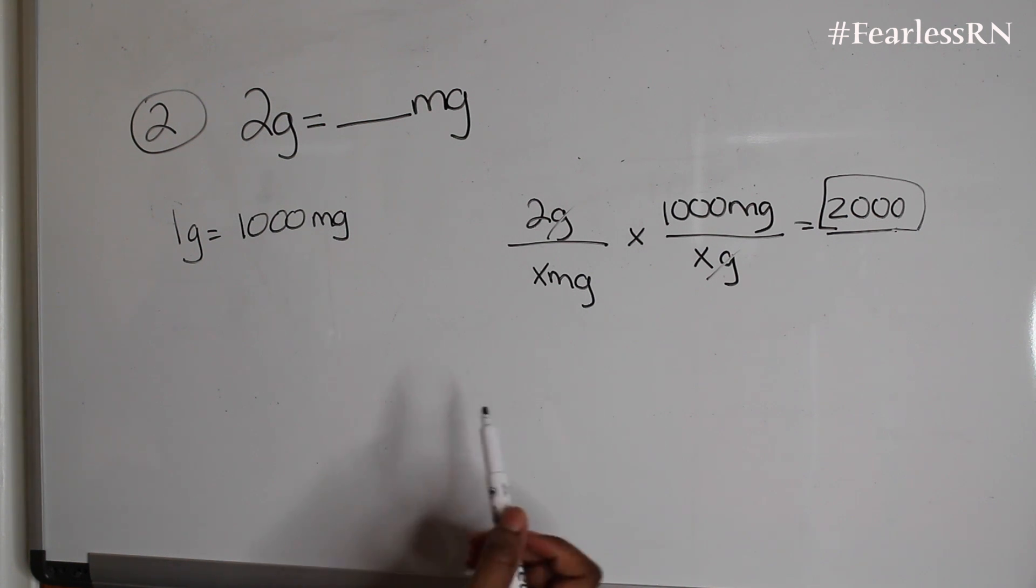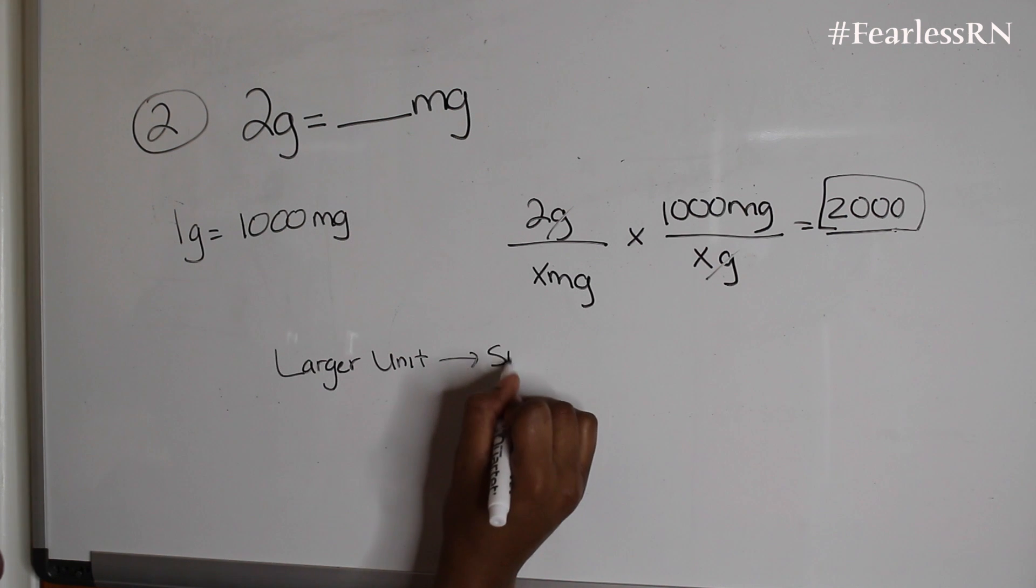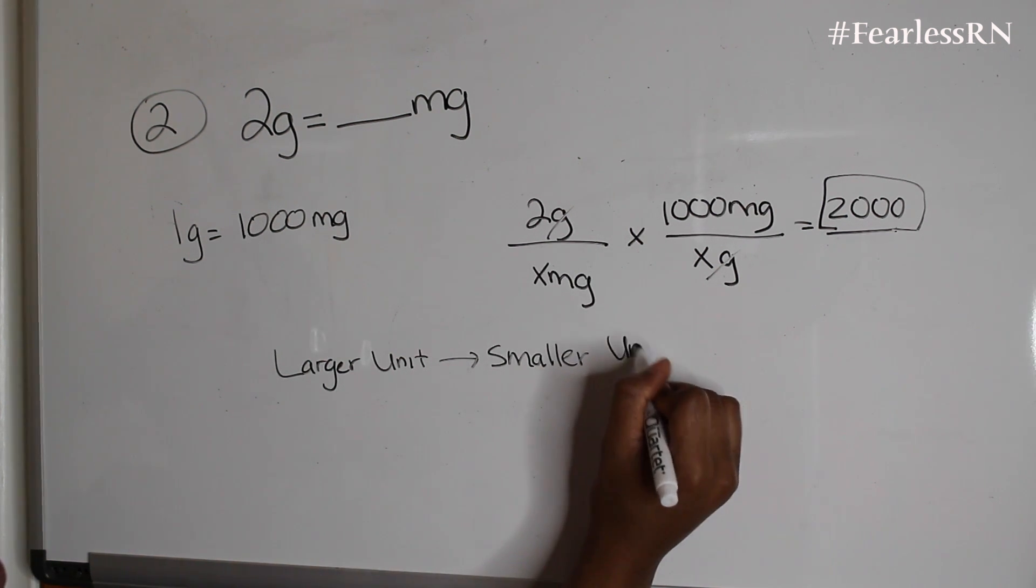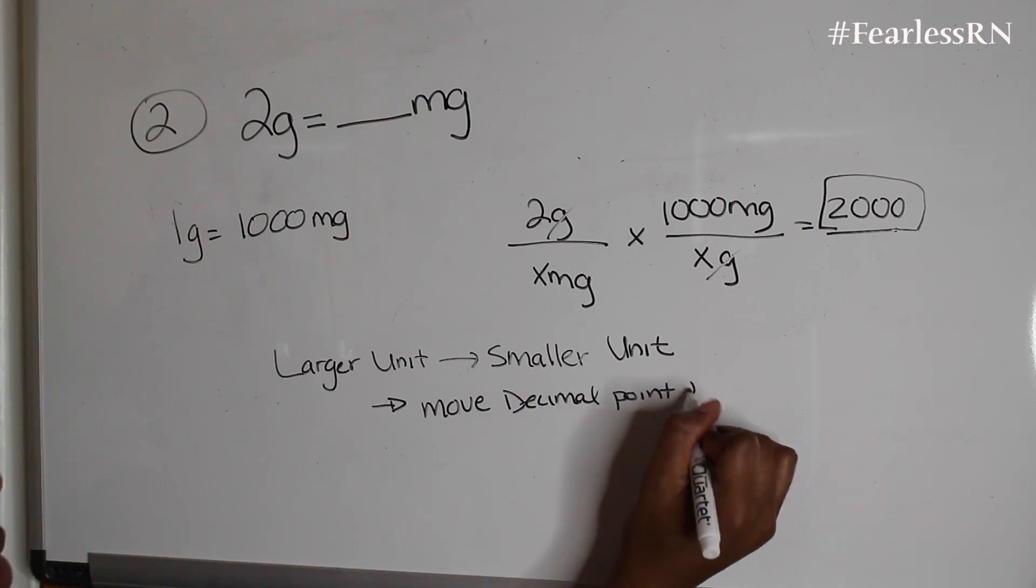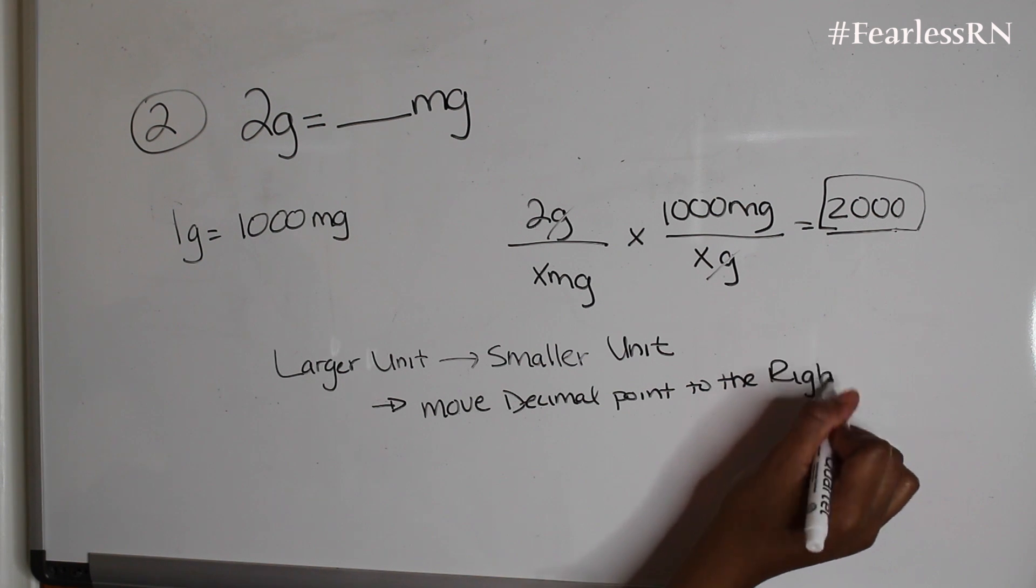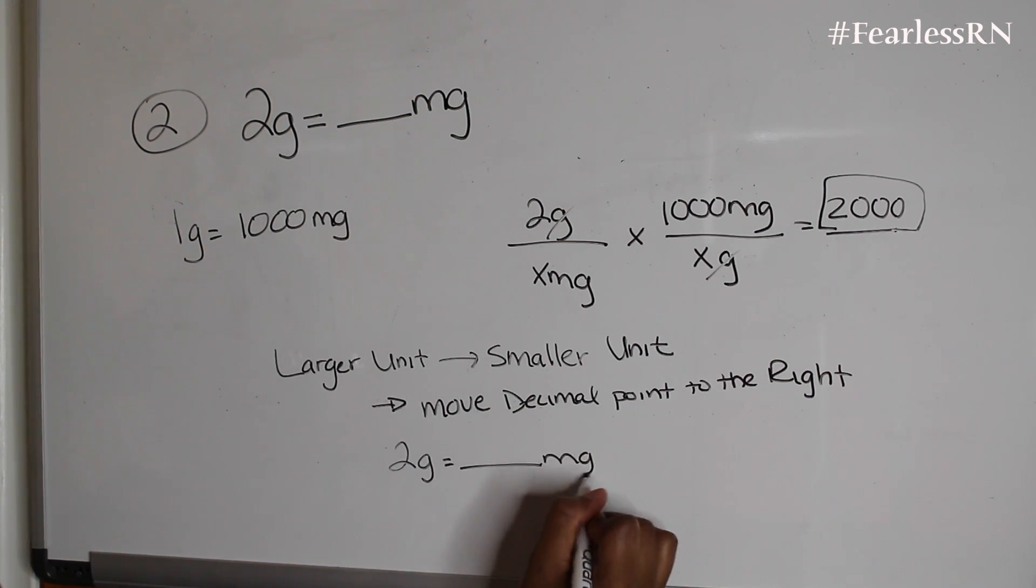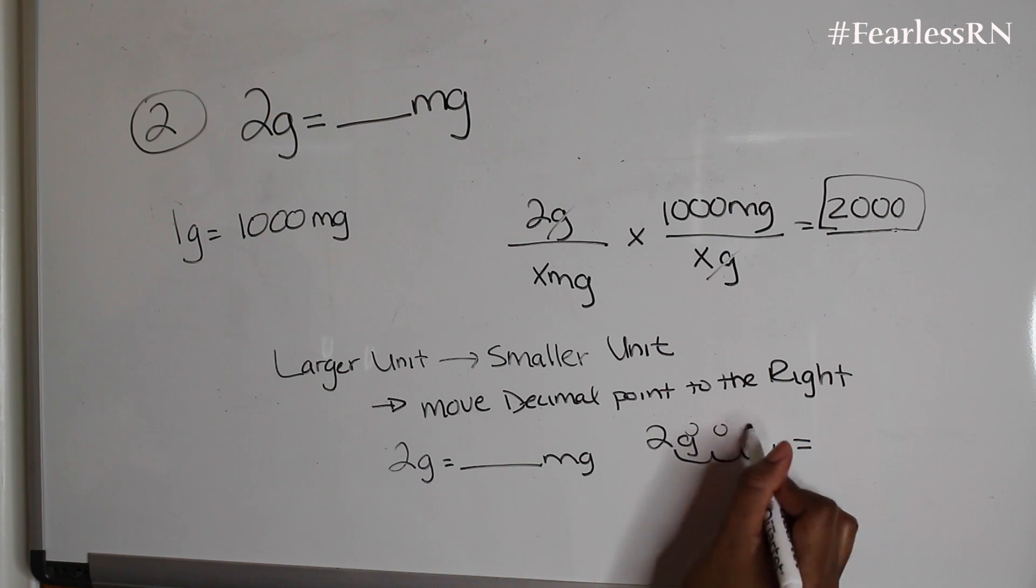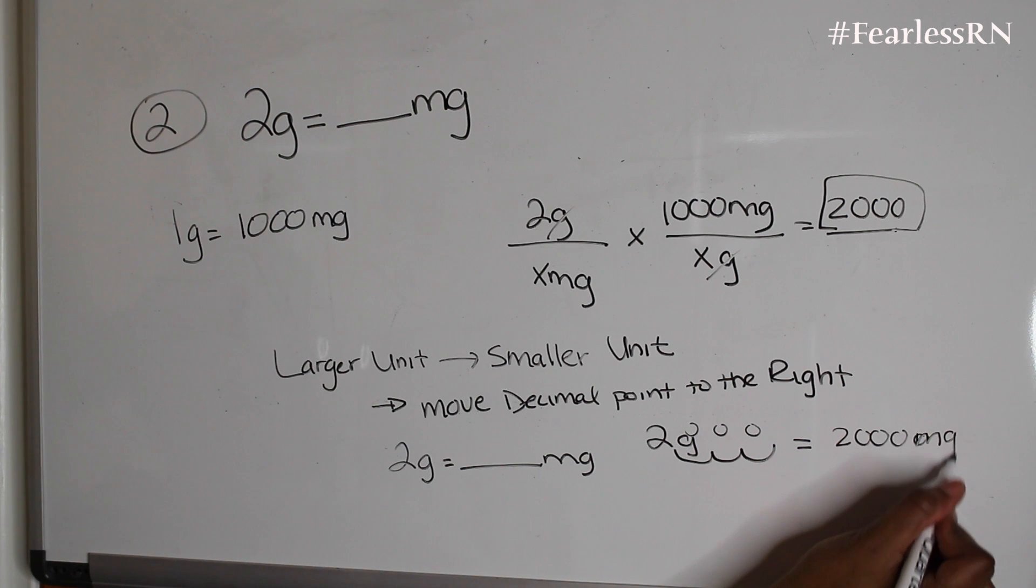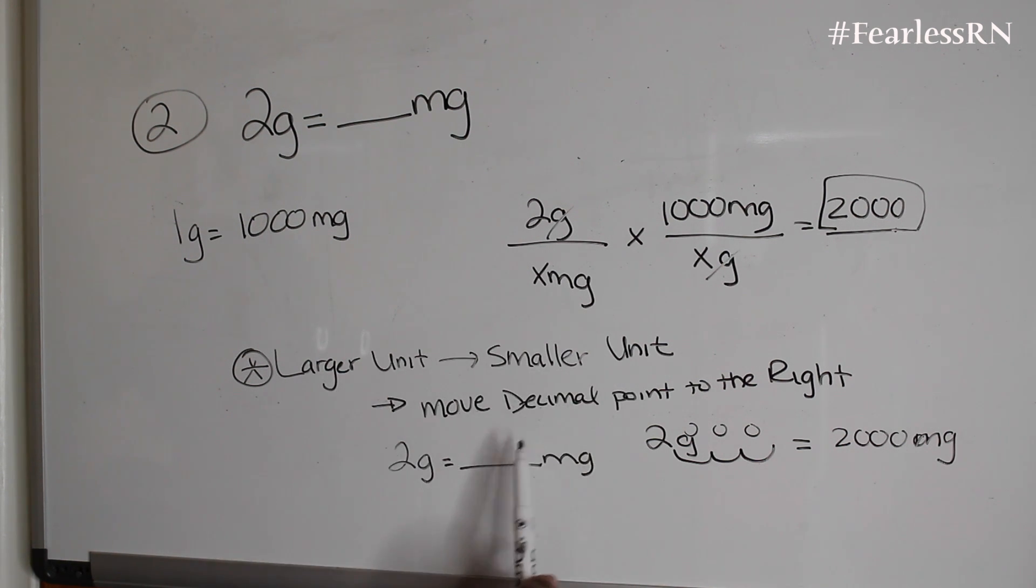A trick to do this problem is to know that when you're going from a larger unit to a smaller unit, move the decimal point to the right. So let's see. So if you have 2 grams, so we'll be here: 1, 2, 3 equals 1, 2, 3, 2,000 milligrams. That is a trick. We're going from a larger unit to a smaller unit. Move the decimal point to the right.